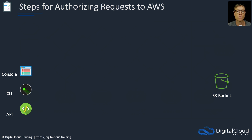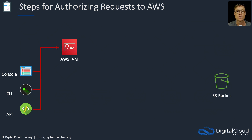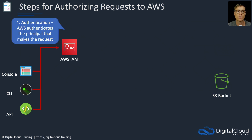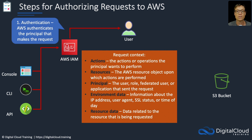So let's firstly start with what are the steps for authorizing requests to AWS. We've touched on this in a little bit of detail already. We have the various methods on the left of how we might authenticate to AWS, and in this example we're trying to connect to an S3 bucket. So we first need to authenticate — AWS will authenticate the principal that makes the request. In this case, it's a user.